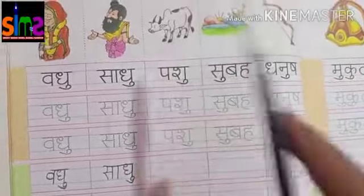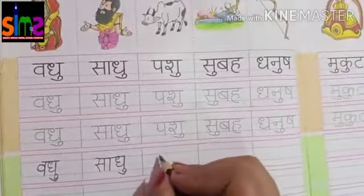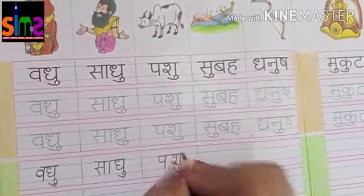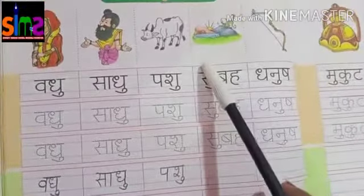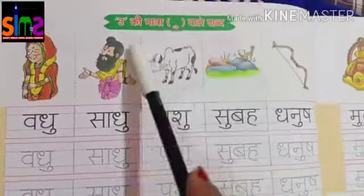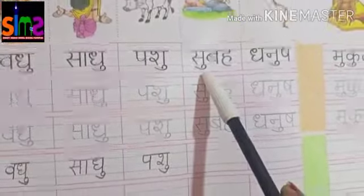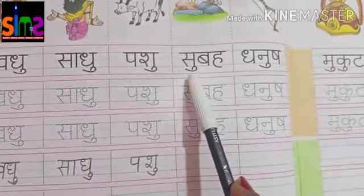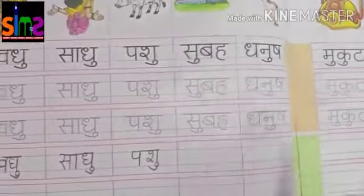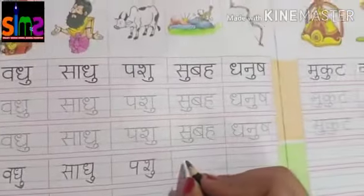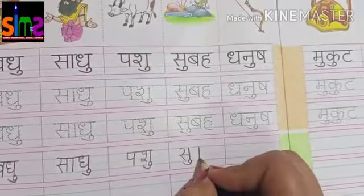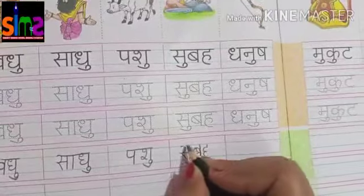Next chitra kis ka hai? Pashu ka. Toh hum yahan Pashu ka shabd likhenge: Pa, sha, u ki matra - shu - Pashu. Next chitra Subhay ka. Hum yahan Subhay ka shabd likhenge: Sa, chhoteyuk ki matra - su, Ba, Ha, Bha - Subhay.